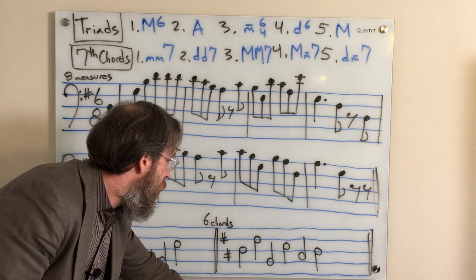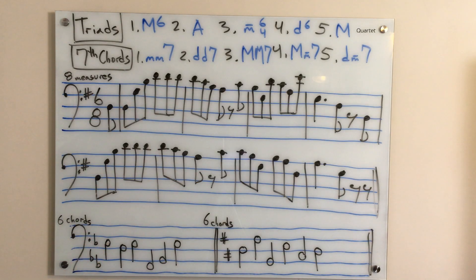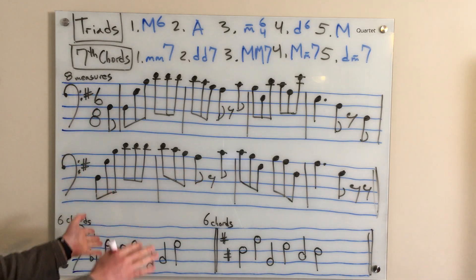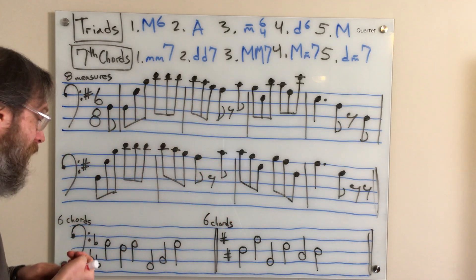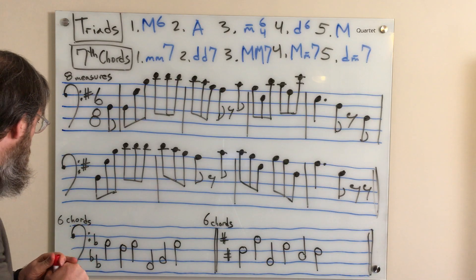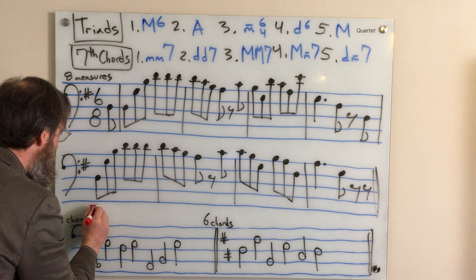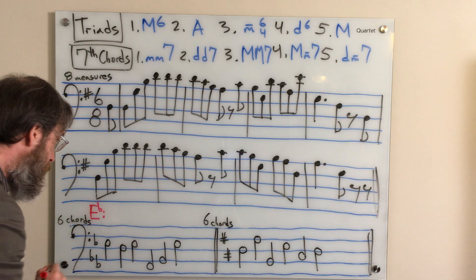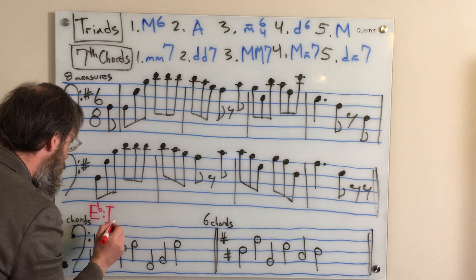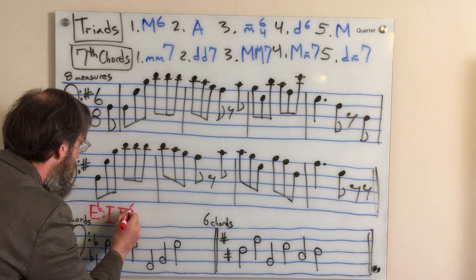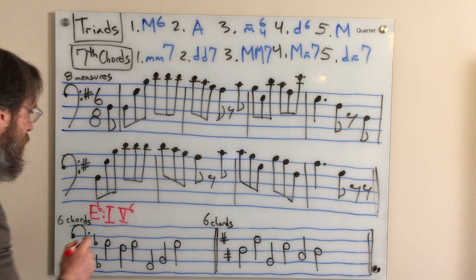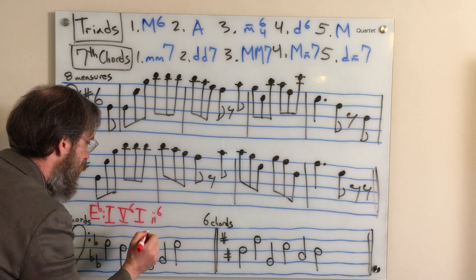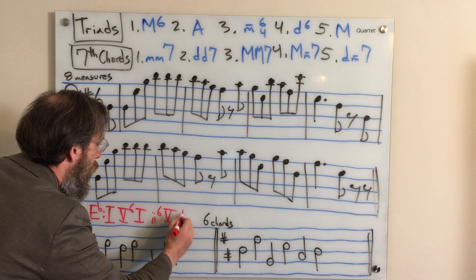Now, finally here for our harmonic dictation, I asked you to write the roman numerals underneath. For the sake of room and I only have so much space here, I'm going to write them above. So you always want to indicate the key. So capital E flat colon, uppercase for major. Our first chord is a one chord followed by a five chord in first inversion. So we're going to call that five, six, back to the one chord to a two chord in first inversion, five chord, one.